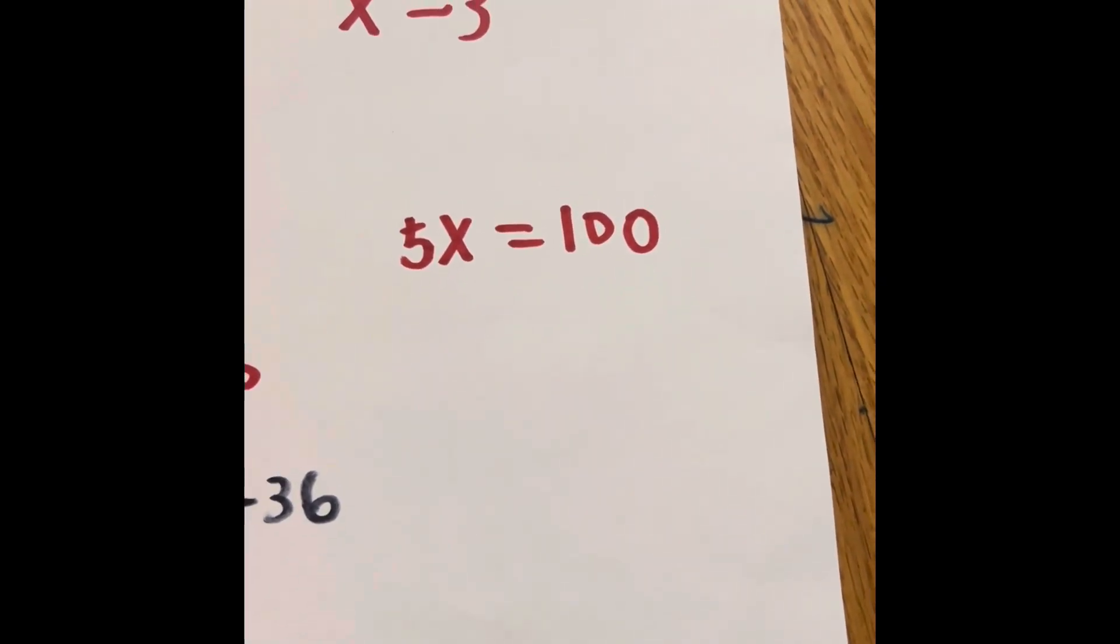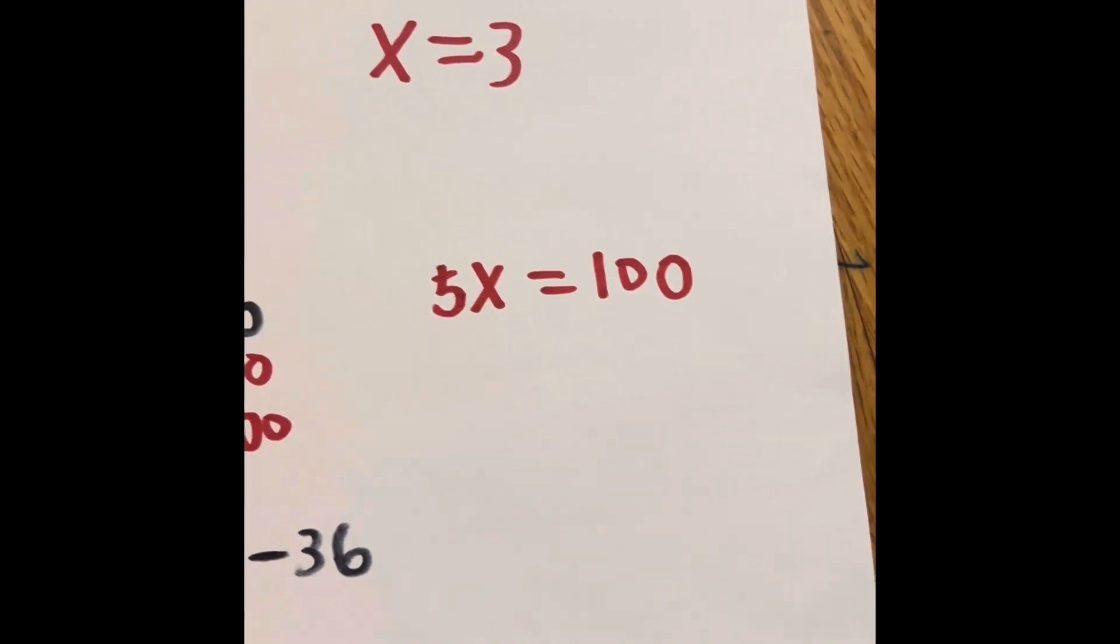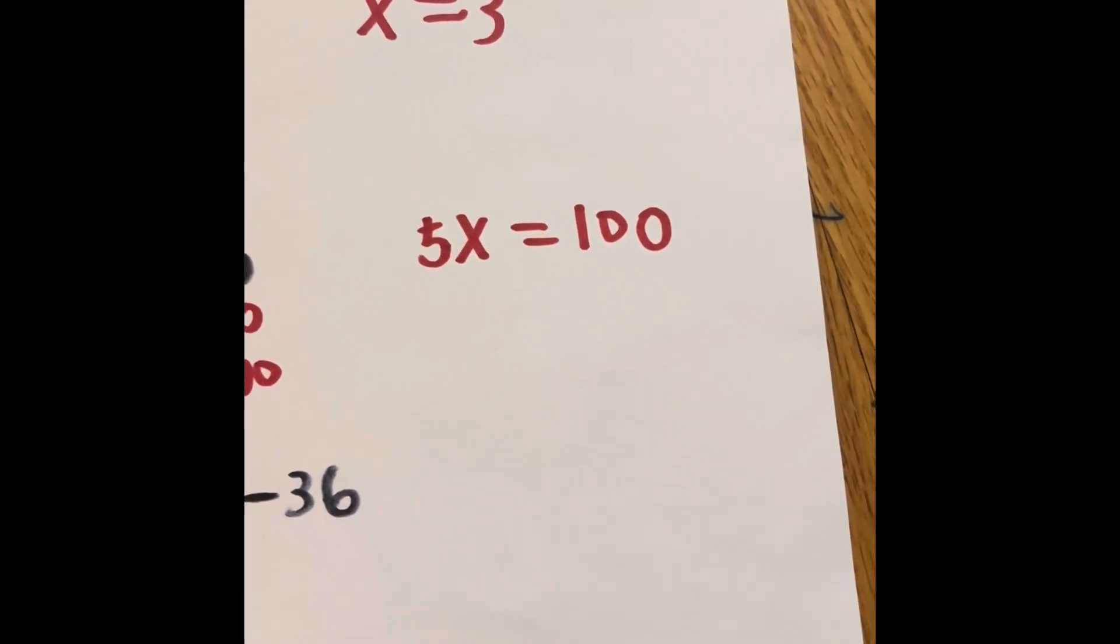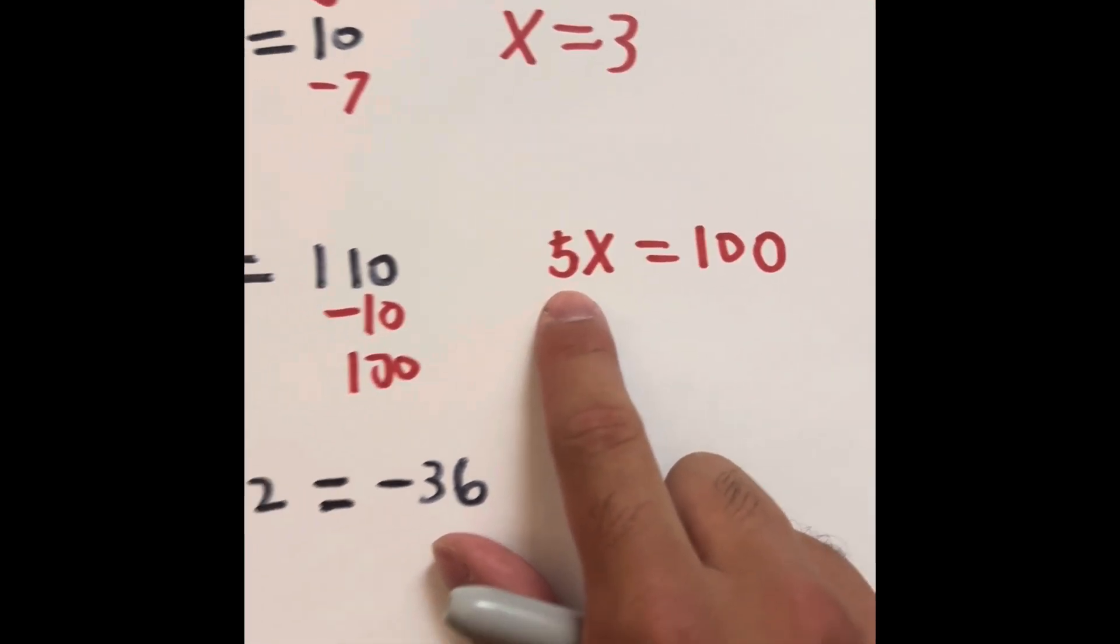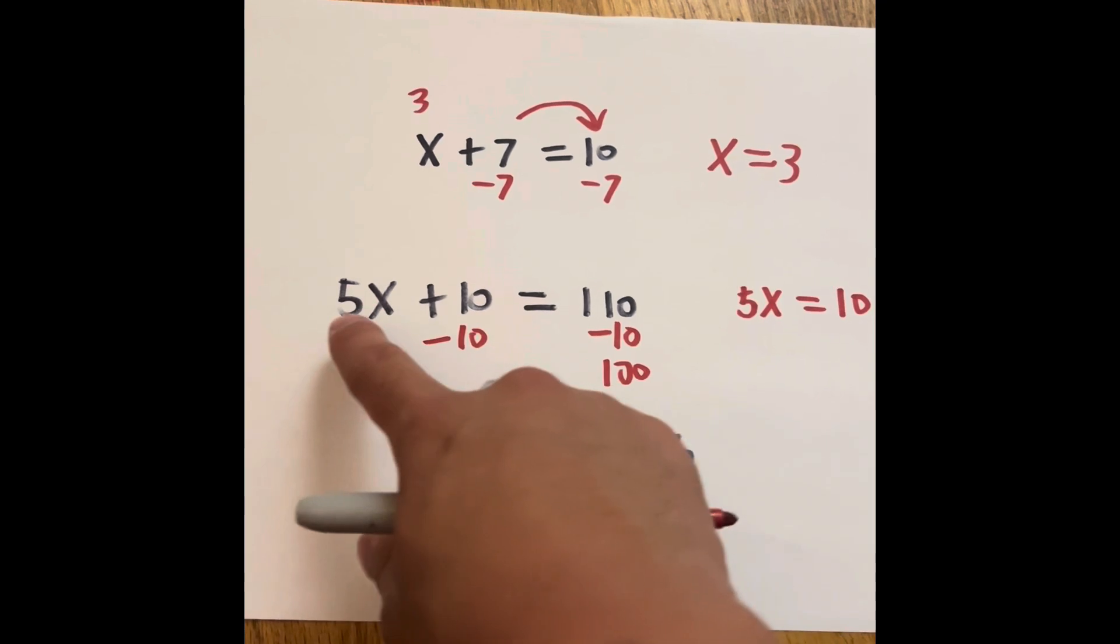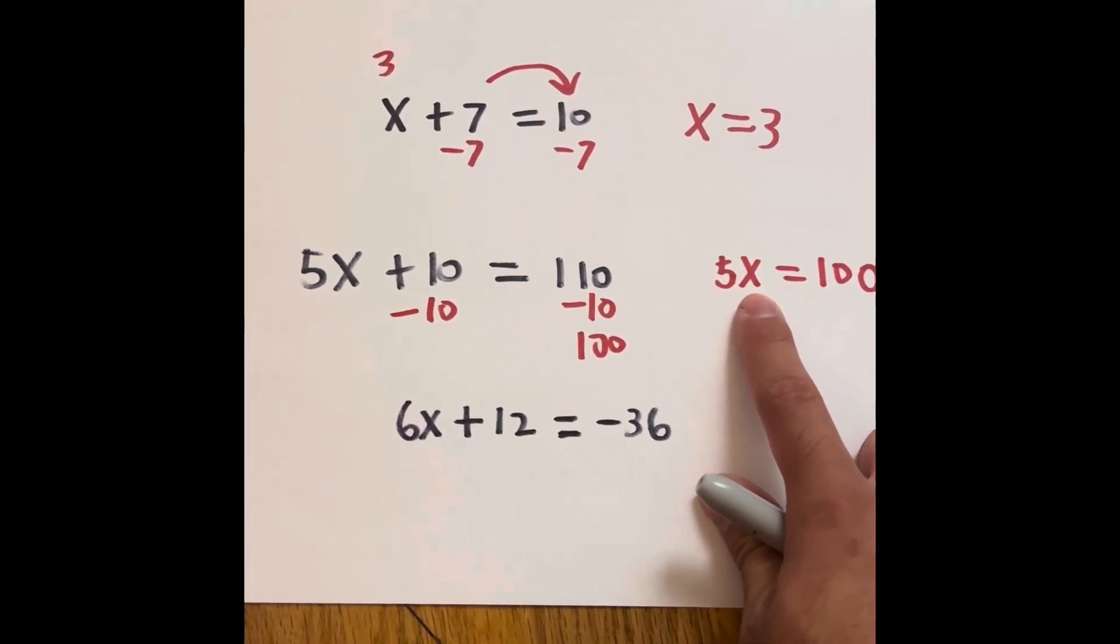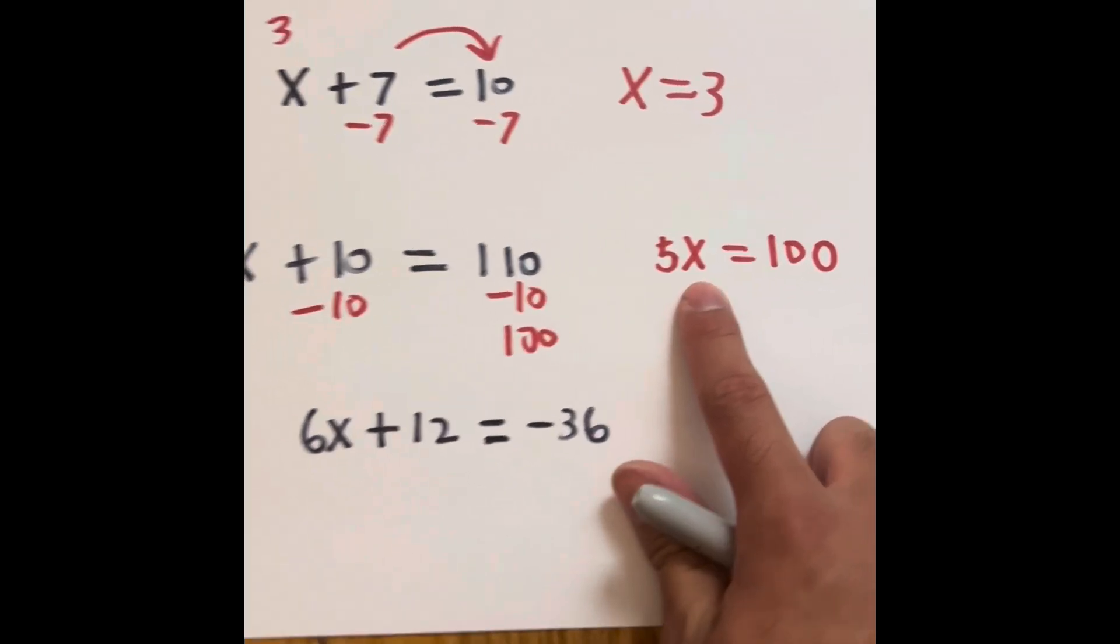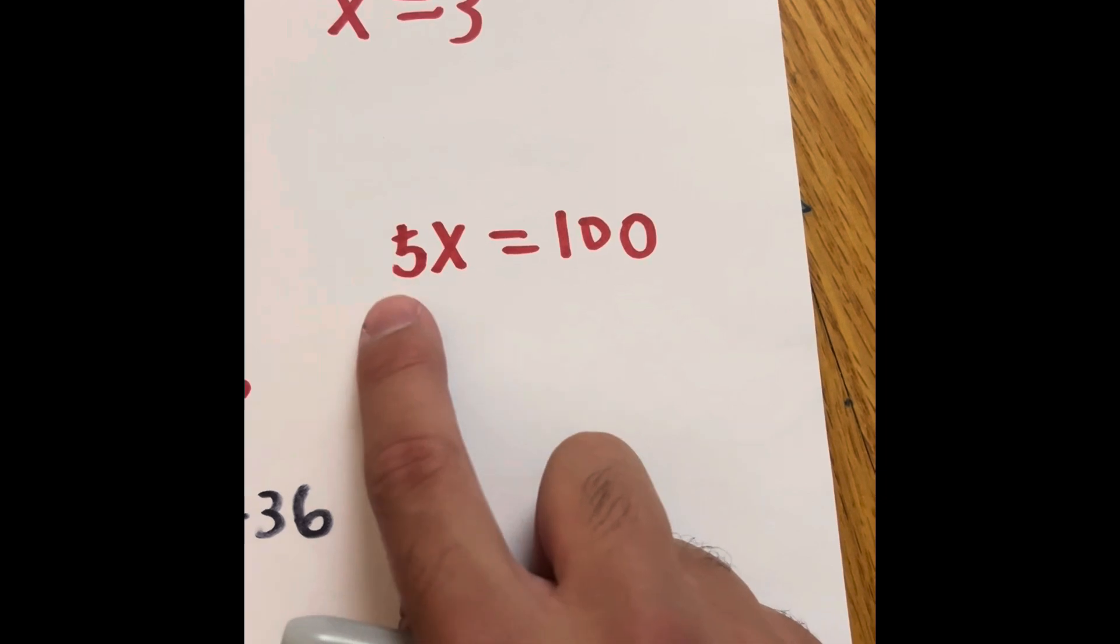But the problem is, how are we going to get to the x? Because what is 5x in the first place? Well, if you have a number before a variable, which an x is called, it's called the coefficient.